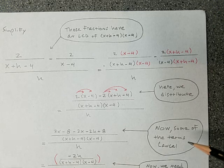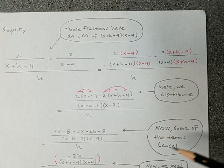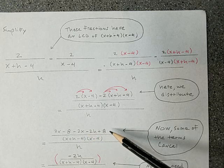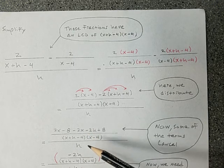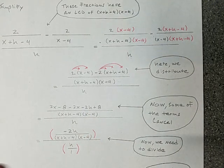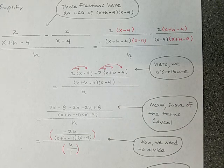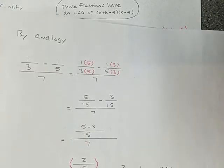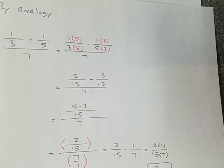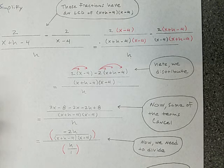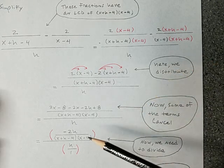What I notice here is some of the terms cancel. The 2x and the negative 2x, the negative 8 and the 8, it just leaves me with negative 2h. Now I'm hoping this looks a lot like this. Really, that's what I'm hoping that you're seeing, is that that was a pretty good analogy to what we needed to do.